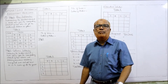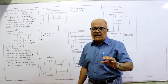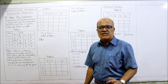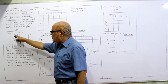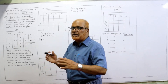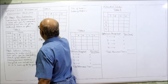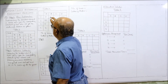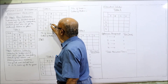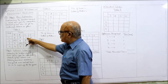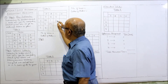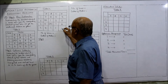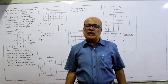Step two is column subtraction — subtracting the smallest element in each column from the corresponding elements of that column to get the reduced matrix, then drawing the minimum number of horizontal and vertical lines to cover all zeros. First column minimum is 0, so values stay the same: 0, infinity, 0, 4. Second column minimum is 3: 3−3=0, 4−3=1, restriction, 4−3=1. Third column minimum is 1: 1−1=0, 3−1=2, 2−1=1, 2−1=1. Last column minimum is 0, so same values: 2, 2, 0, 0.